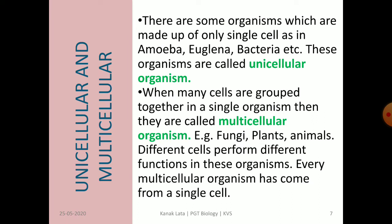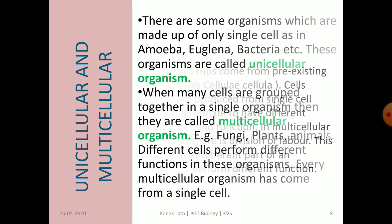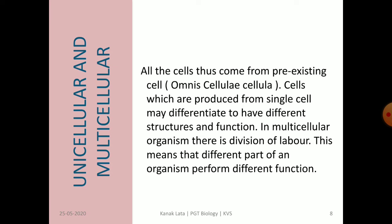Now let us see about unicellular and multicellular organisms. Uni means one and multi means many. Organisms made up of a single cell are called unicellular — for example, amoeba, euglena, bacteria, chlamydomonas, and yeast. Organisms made up of many cells grouped together to form tissues are called multicellular organisms — for example, fungi, plants, and animals. In multicellular organisms, there is division of labor, but in unicellular organisms, a single cell performs all the activities of life.